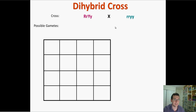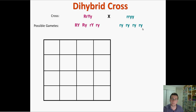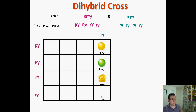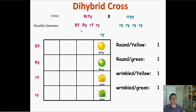Now let's do yet another cross — a hybrid crossed with someone who is completely recessive for everything. The hybrid makes four different gametes, but the fully recessive organism can only make one type of gamete. So you only need one column in the Punnett square. The four offspring will be: dominant for both (round yellow), dominant for first but recessive for second (round green), recessive for first but dominant for second (wrinkled yellow), and recessive for both (wrinkled green) — giving a 1:1:1:1 ratio.